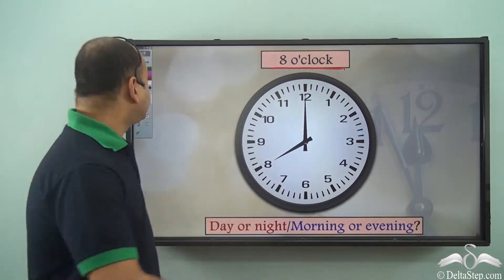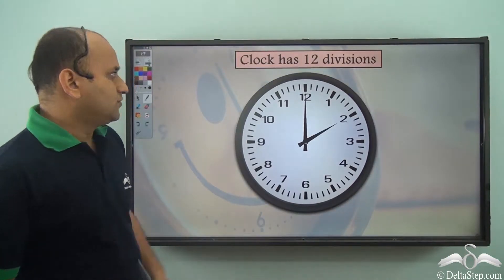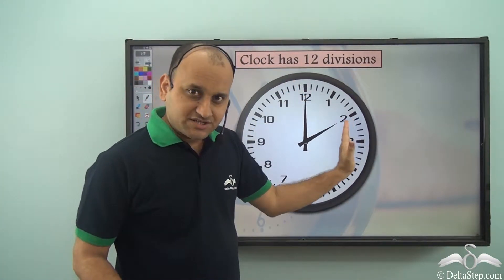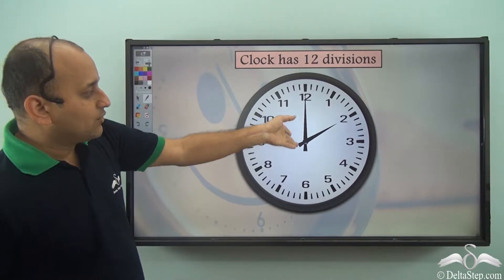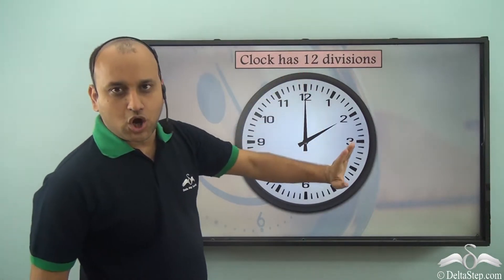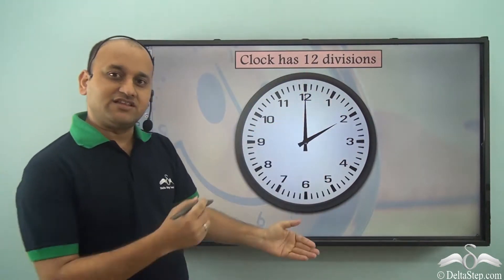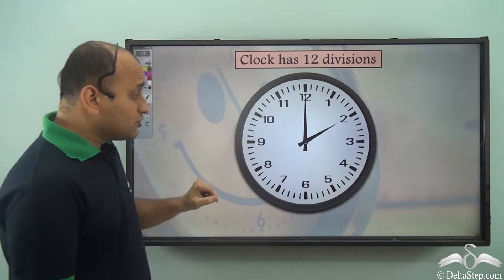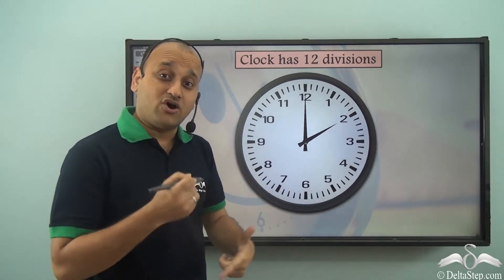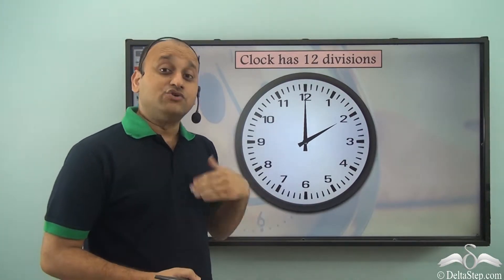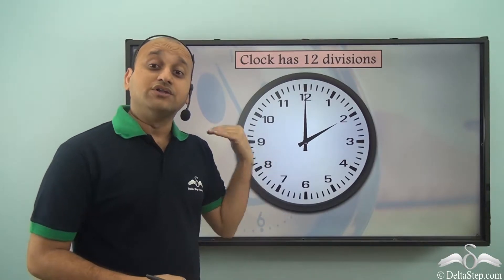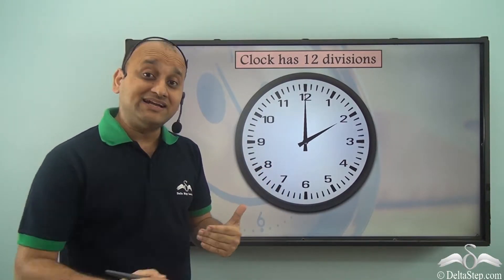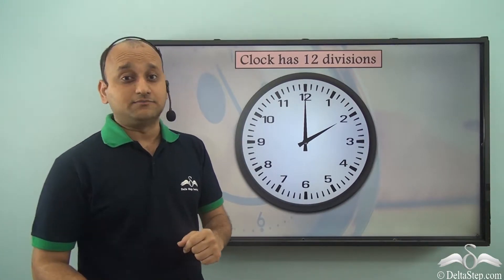A clock has 12 divisions. Right now it's 2 o'clock, but again you cannot say whether it is day or it is night. So to understand whether it is day or night, you'll have to understand how the clock completes a circle and how many times in a day it completes a circle.